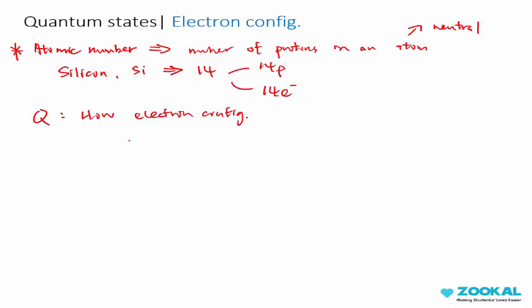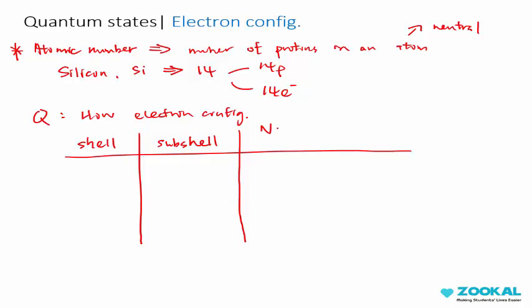The question is, how do you draw the electron configuration? There's a few things you have to understand. First, there is something called shell, and then something called subshell, and you have some number of states. This state is quantum states. And you have maximum number of electrons under that specific state. Shell I can represent as n.